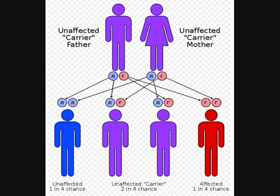But when they have children, there are three different possibilities. One possibility — one in four — is that we will have a normal child. This normal child will have no problems and will not carry the sickle cell gene.